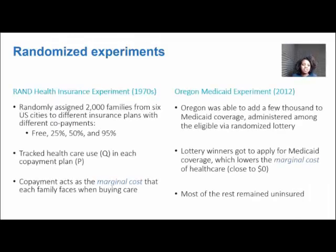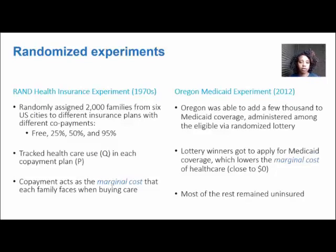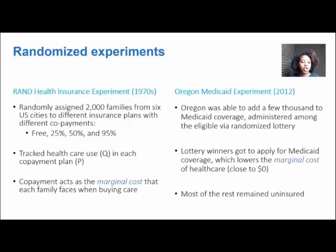In the 1970s, the RAND Corporation — which stands for Research and Development, a big corporation that does policy research — conducted the RAND Health Insurance Experiment. They randomly assigned 2,000 families in six different cities to different kinds of insurance plans with different co-payments. The most generous plan is the free plan, where all health care is free, and the opposite is the 95% plan, where you pay 95% of the cost for every health care service consumed. In between are the 25% and 50% plans.